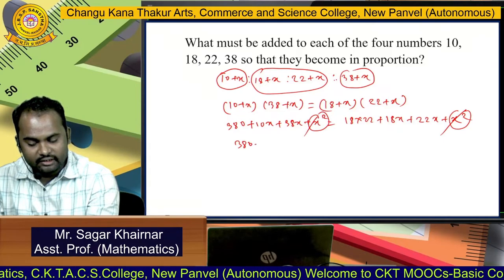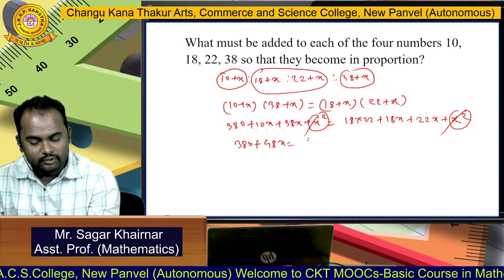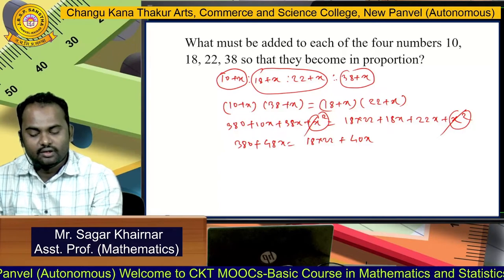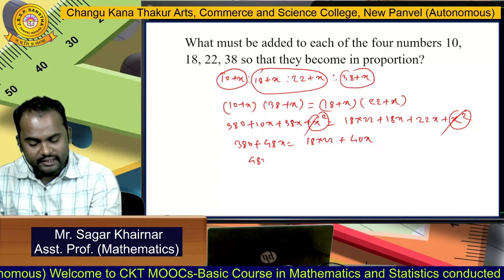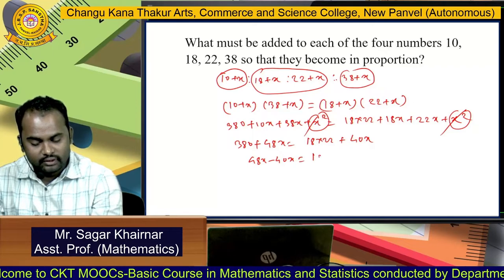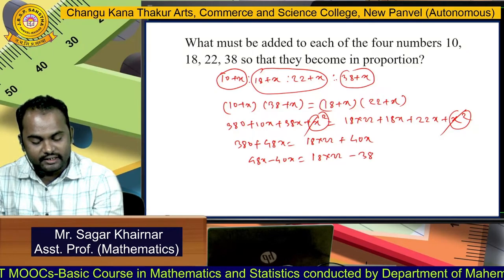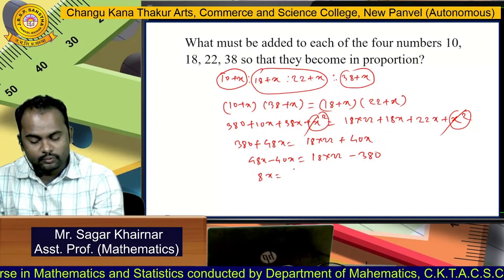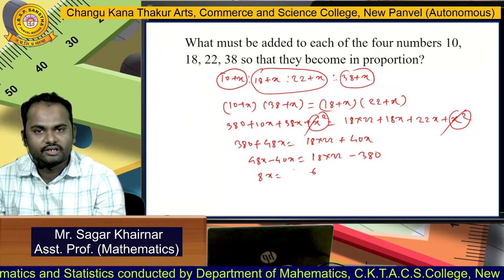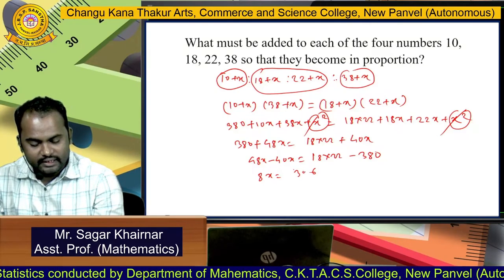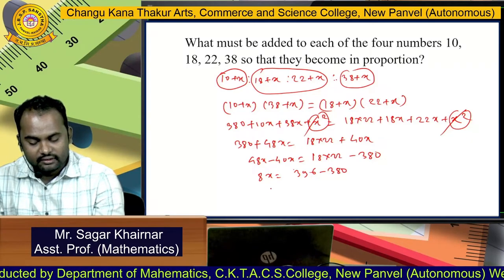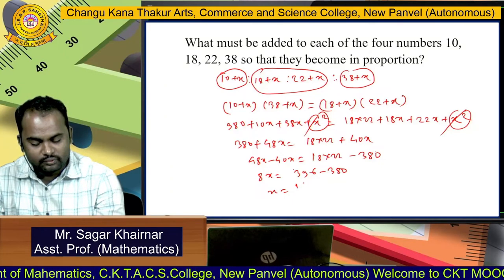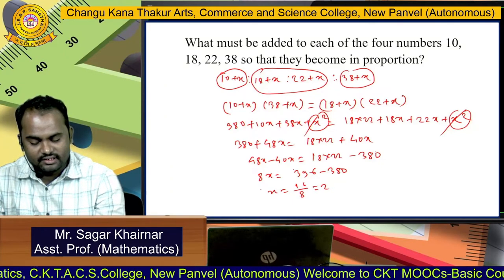We cancel X² from both sides. We get 380 + 48X = 396 + 40X. Shifting terms: 48X − 40X = 396 − 380, so 8X = 16.